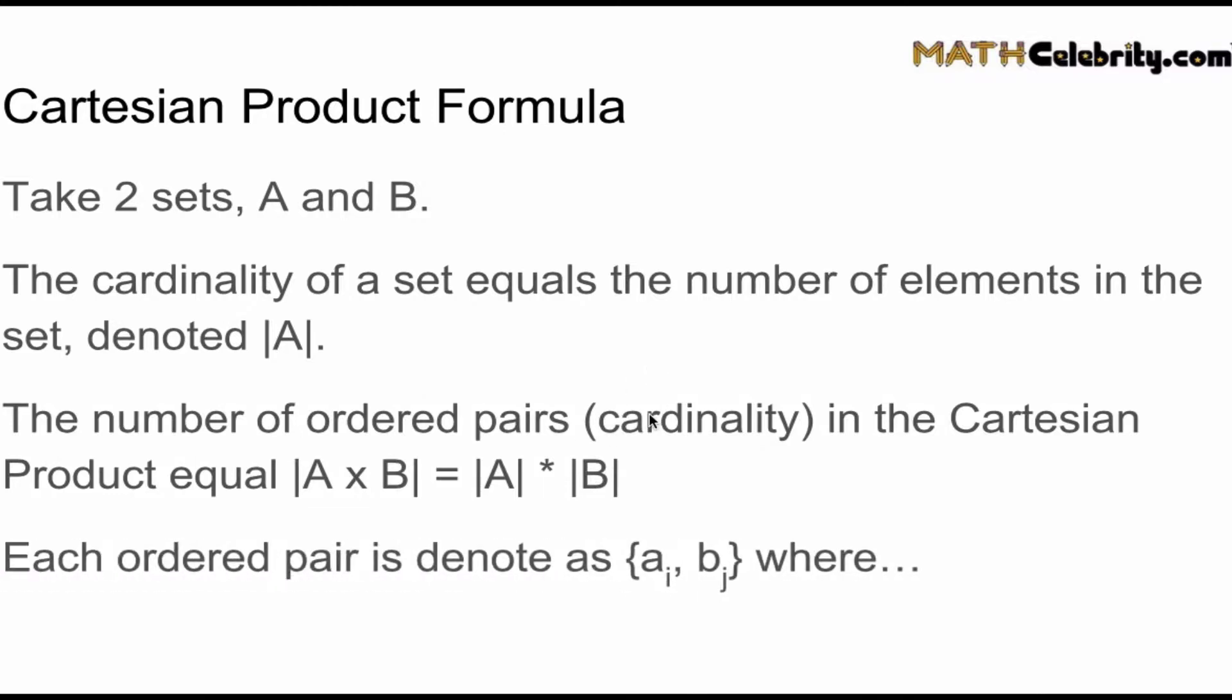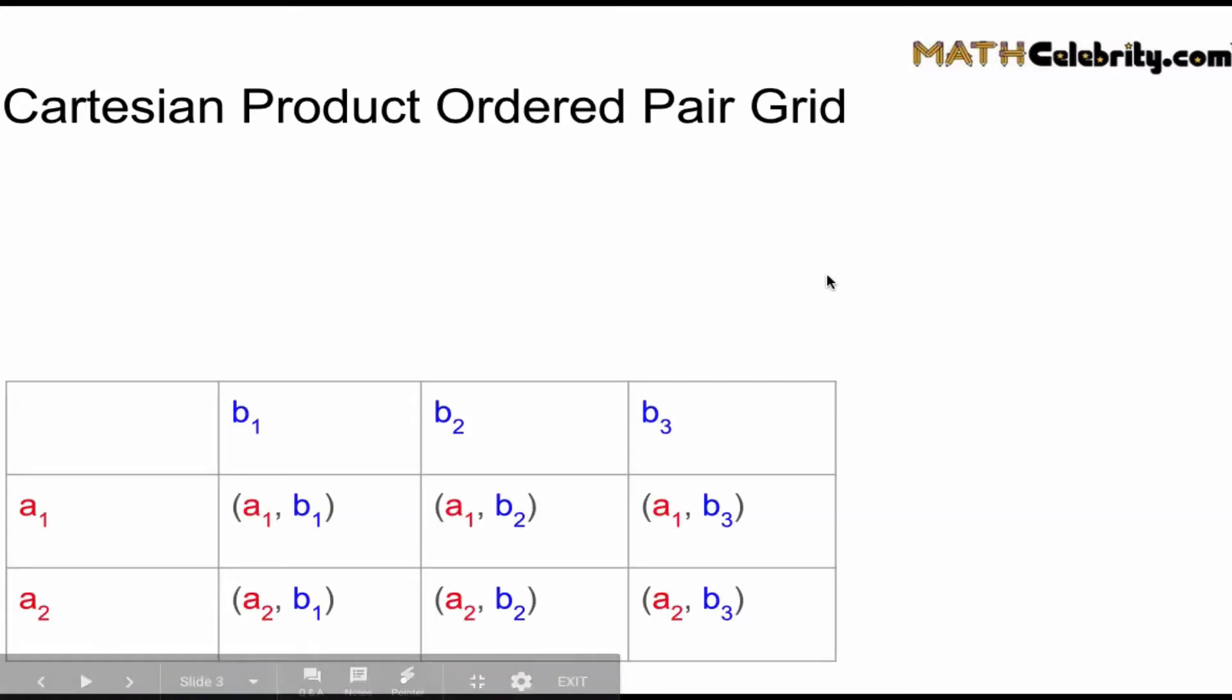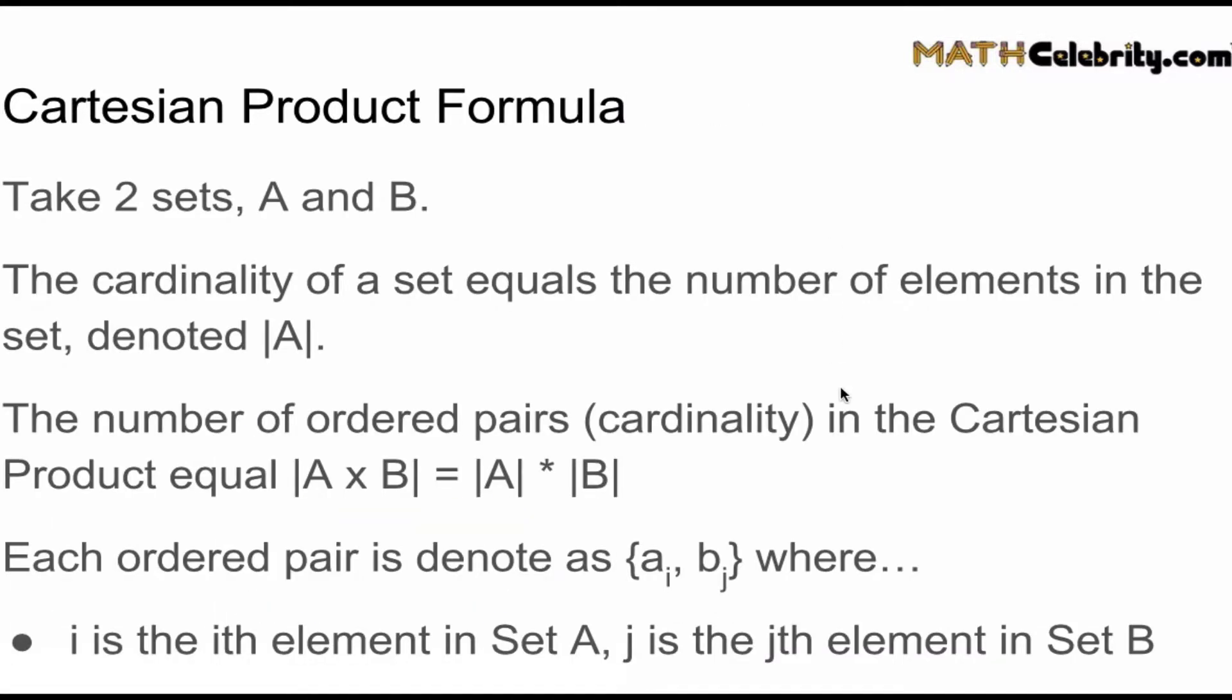Each ordered pair we denote as a sub i and b sub j, where i is the i-th element in set A and j is the j-th element in set B.